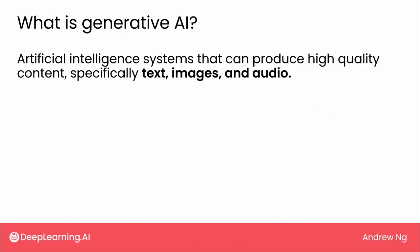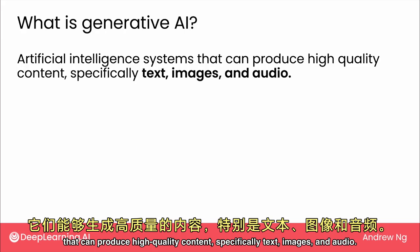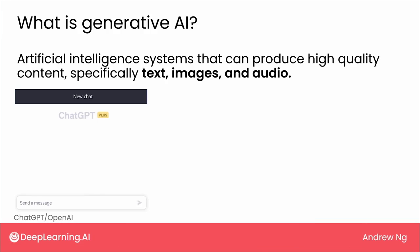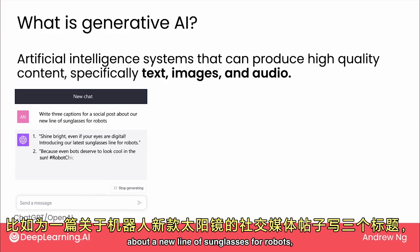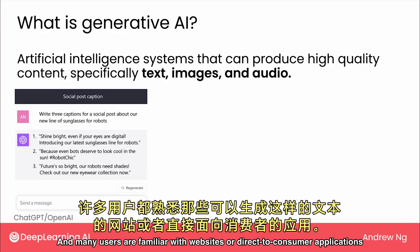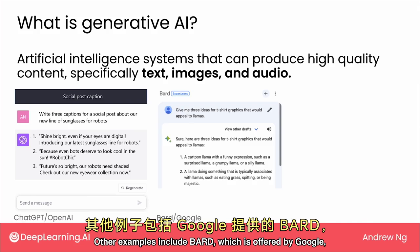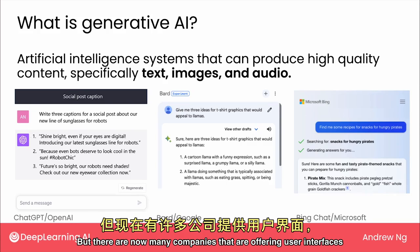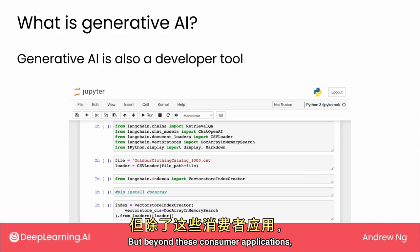What is Generative AI? This term refers to AI or artificial intelligence systems that can produce high-quality content — specifically text, images, and audio. One of the best-known Generative AI systems is OpenAI's ChatGPT, which can follow instructions to carry out tasks like writing captions for a social media post and generate a variety of creative outputs. Other examples include Bard, which is offered by Google, as well as BingChat, offered by Microsoft. There are now many companies offering user interfaces that let you type in some text — called a prompt — and will generate a response.